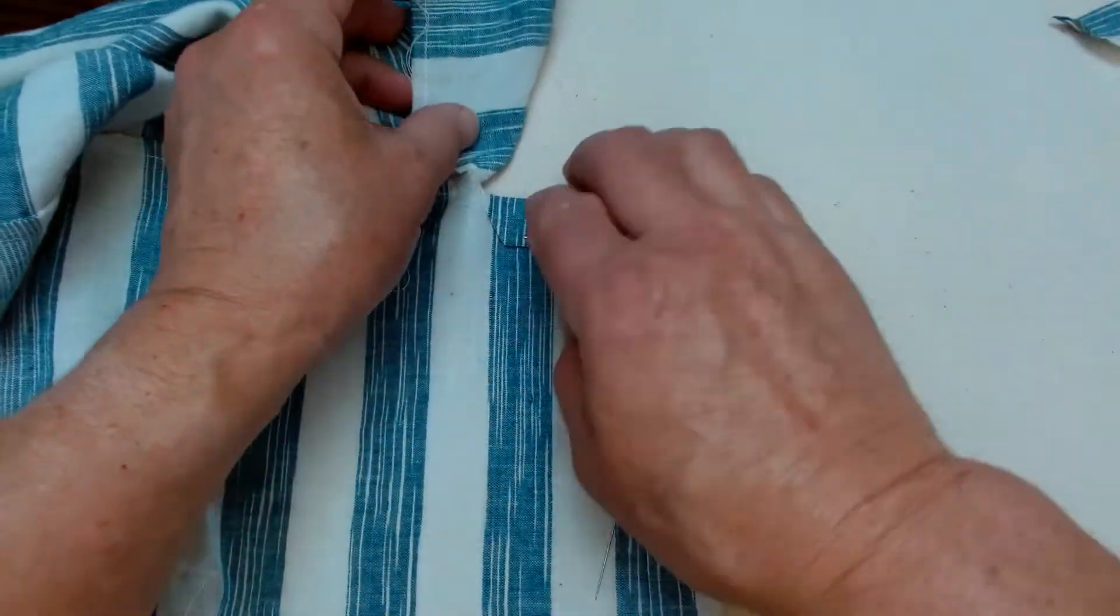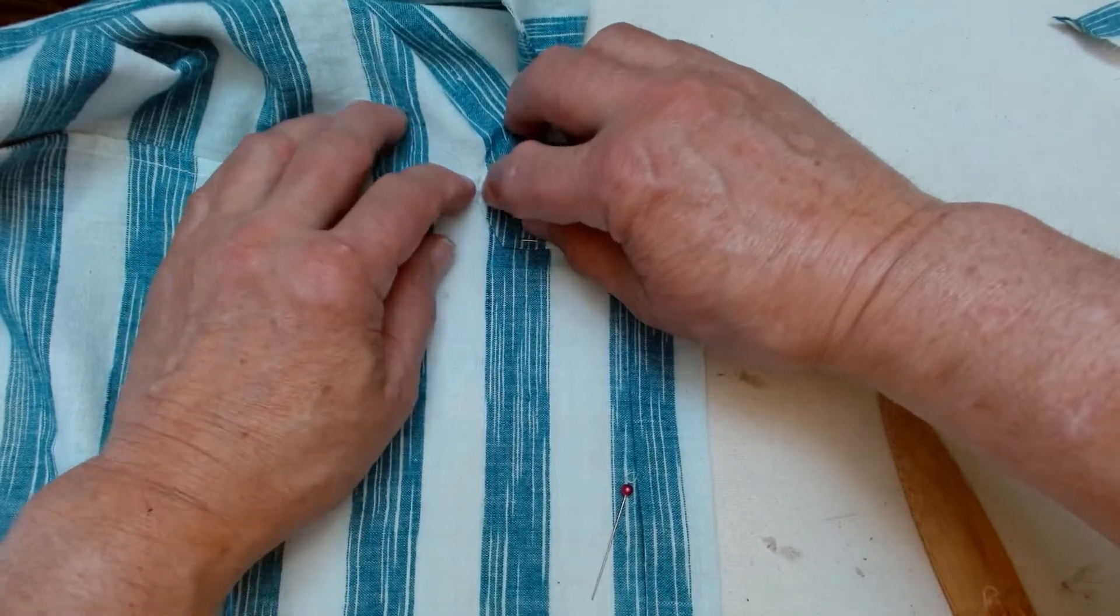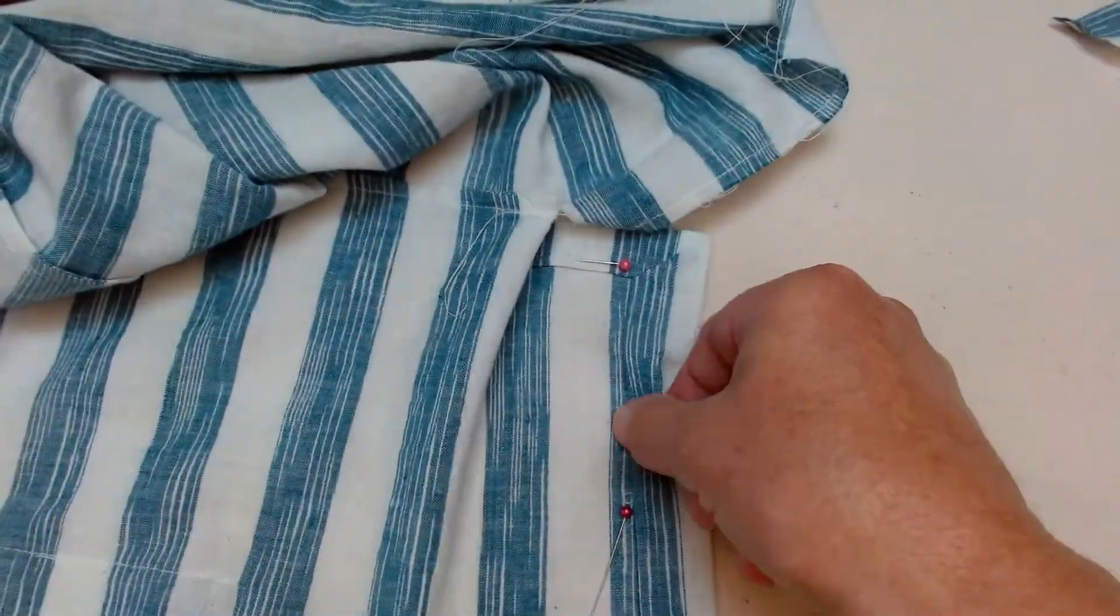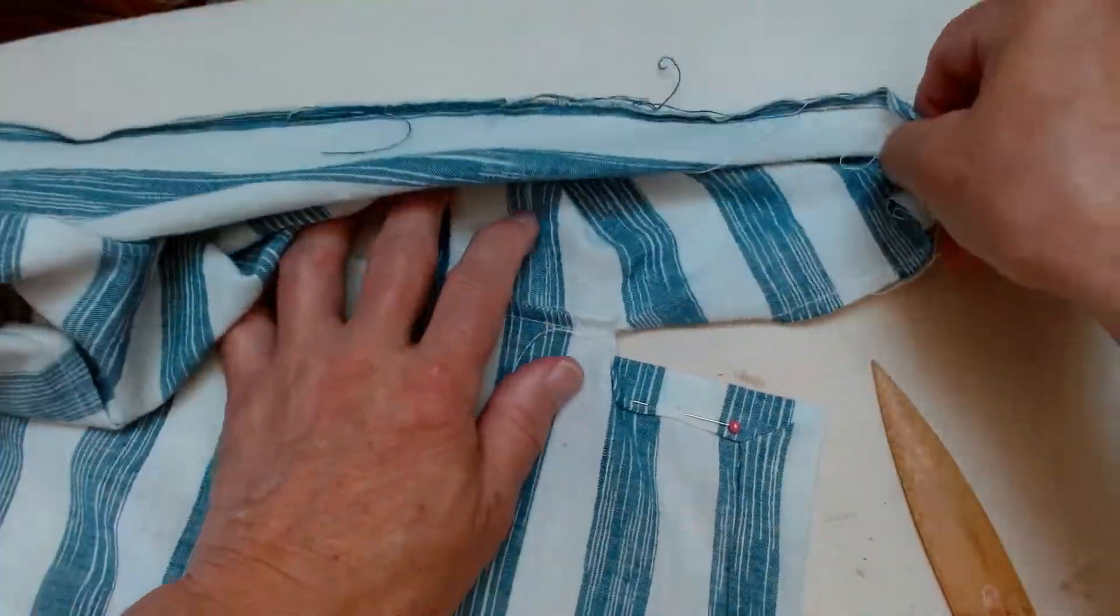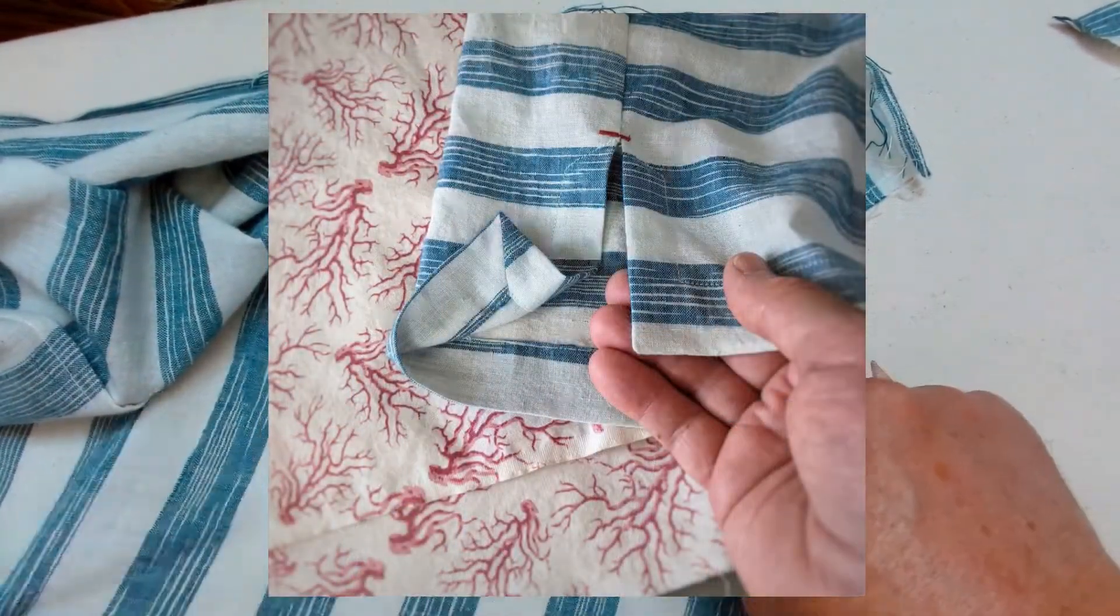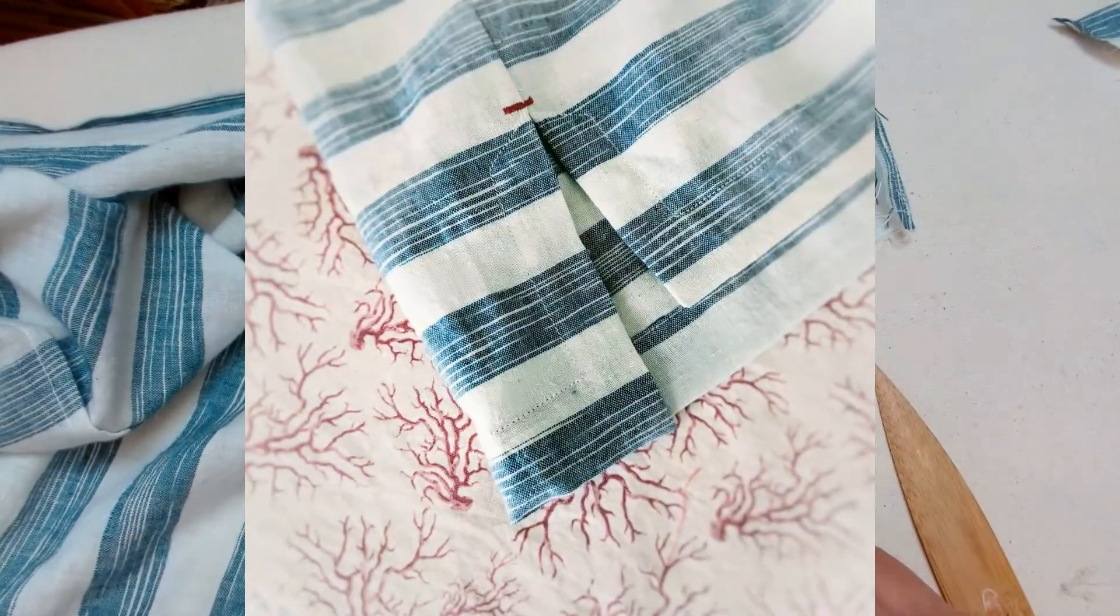Once all of these have been made, you'll notice that you still have a raw edge up here. At that point I would pull out my Janome machine that does a zigzag. And I would do like a bar tack across there to prevent any fraying.